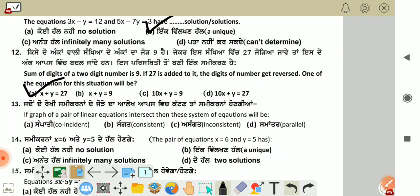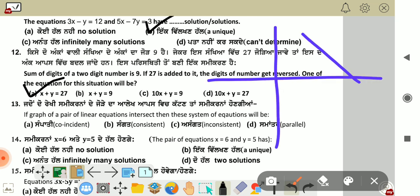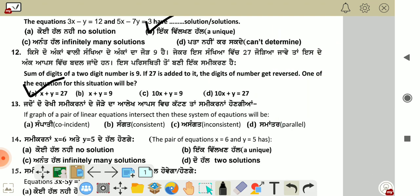If graph of a pair of linear equations intersect, then these system of equations will be consistent. When two lines intersect, they have consistent solutions. The answer is B option.